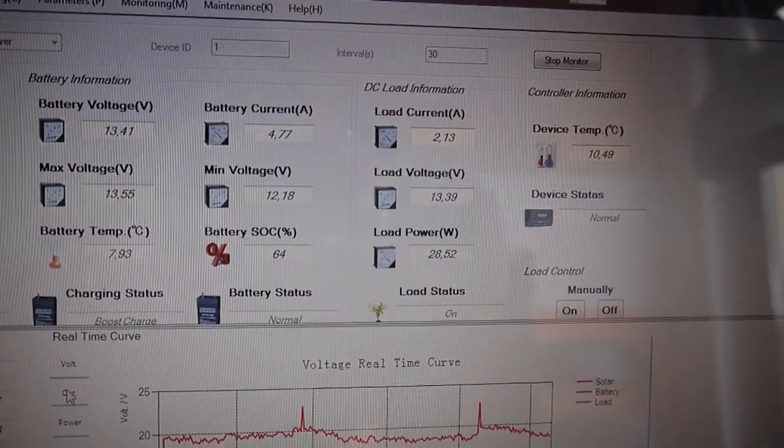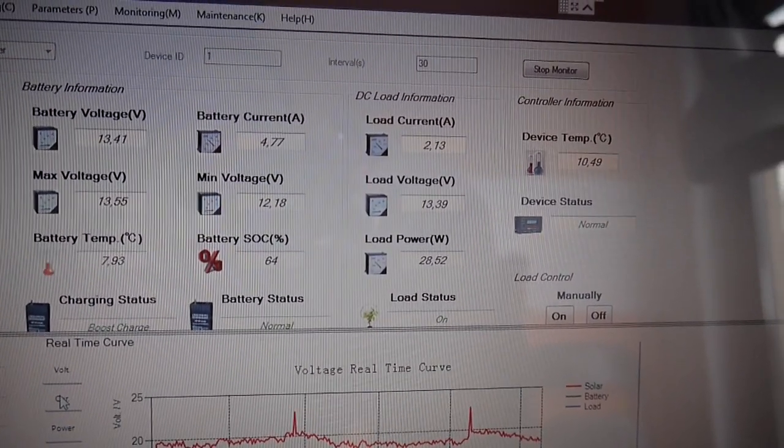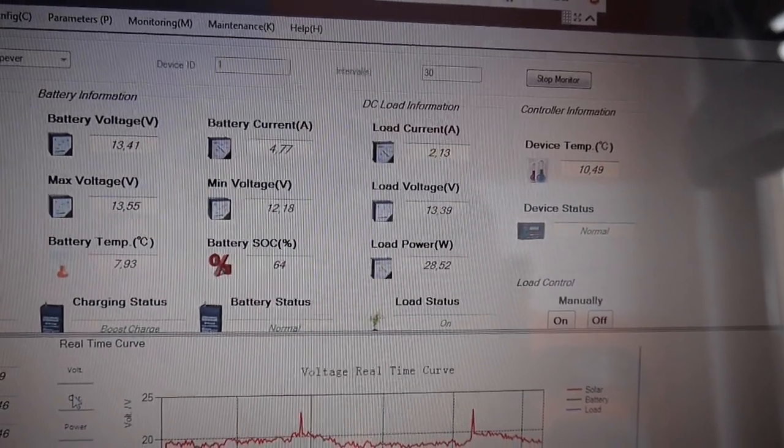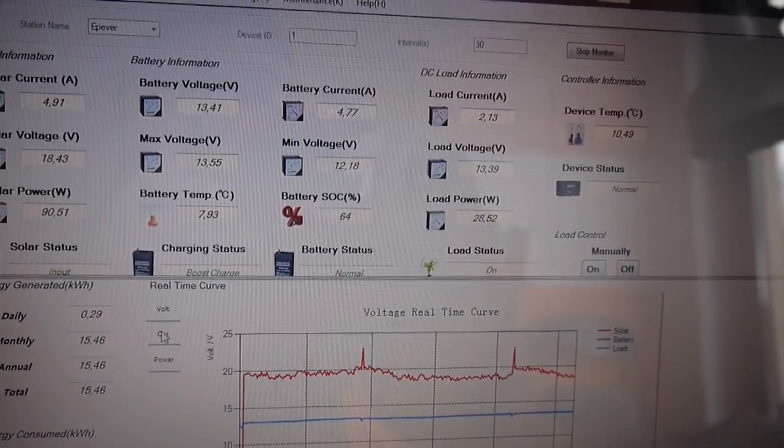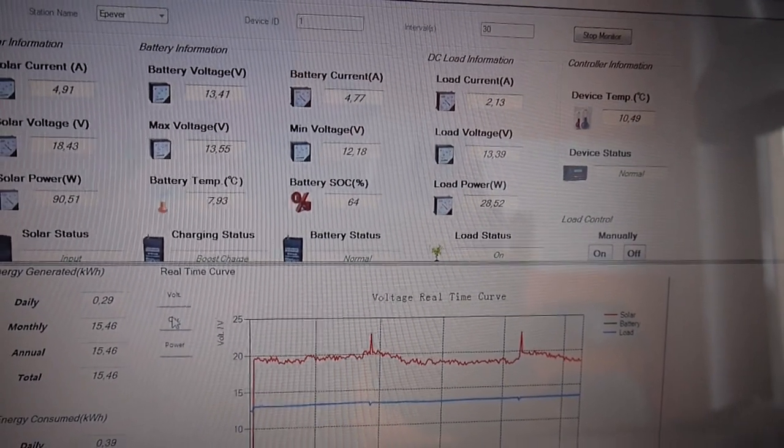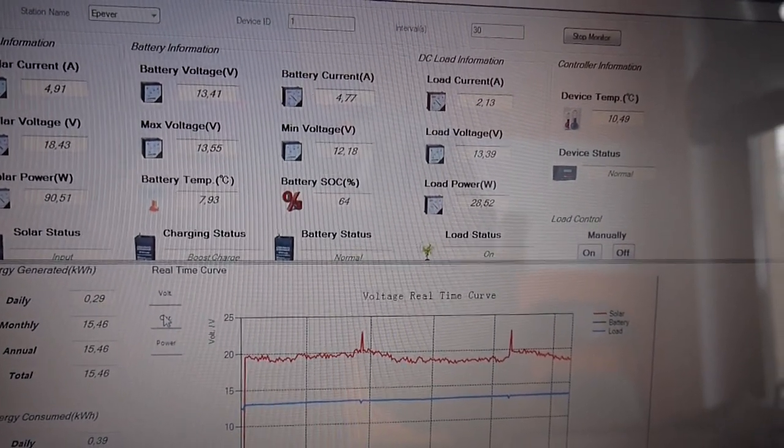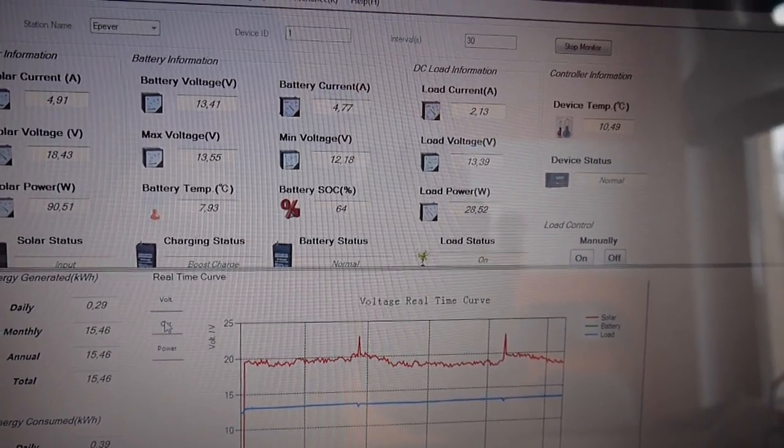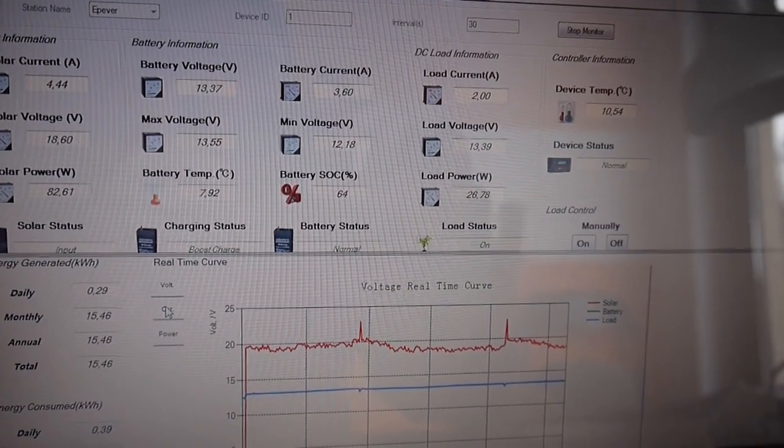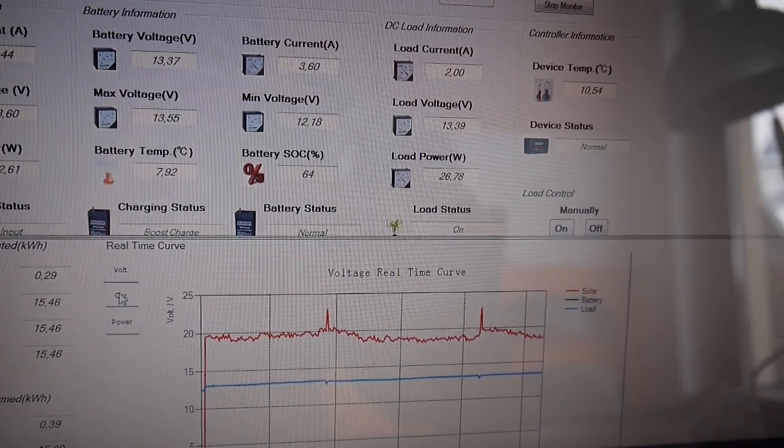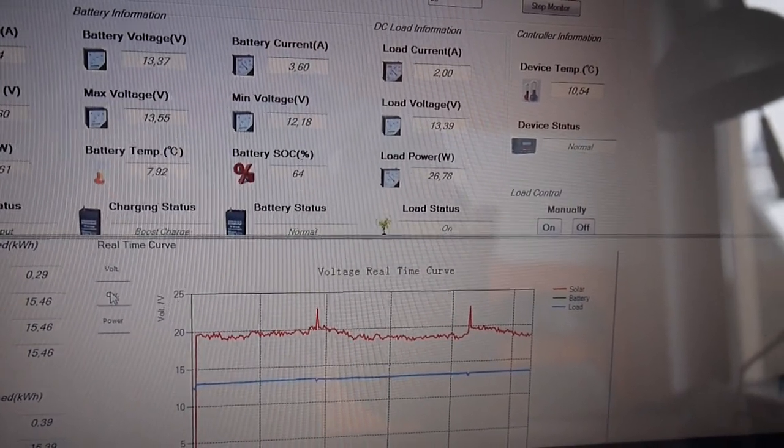I have a load of 2.1 amps constantly because this solar charger and the battery is a supply for a camera surveillance installation and one modem and two routers. The total voltage for now is 26 watts in the daytime.